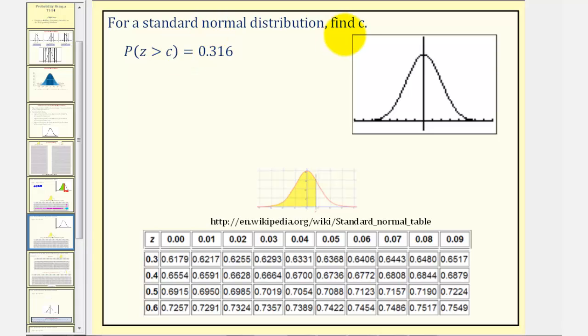For a standard normal distribution, we want to find C such that the probability of Z being greater than C equals 0.316, which means the probability that a randomly selected data value would have a Z-score greater than C is equal to 0.316.